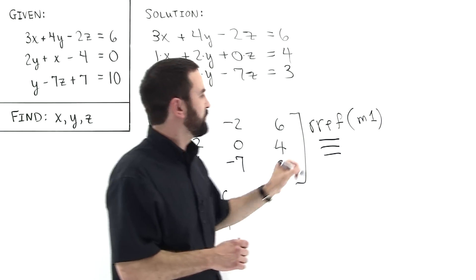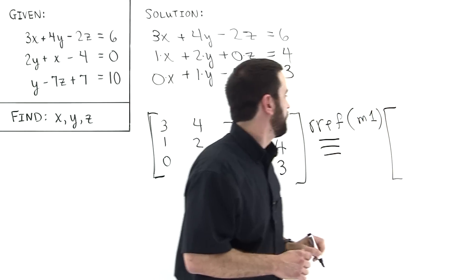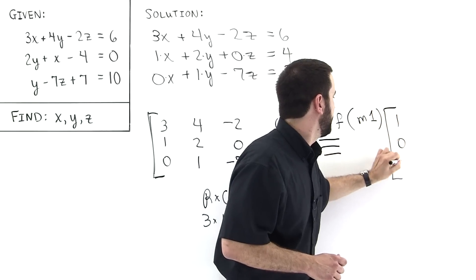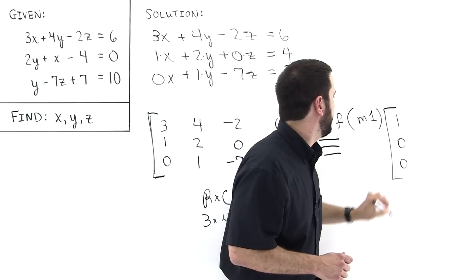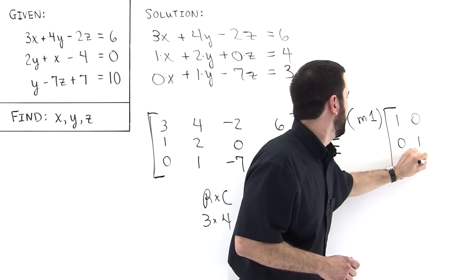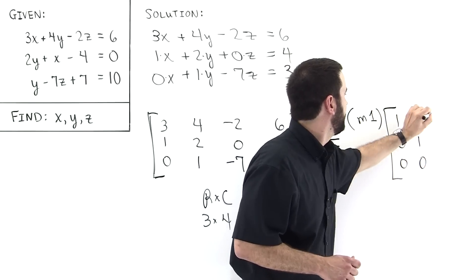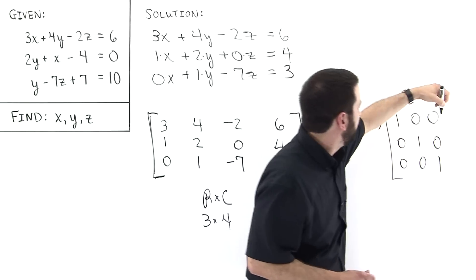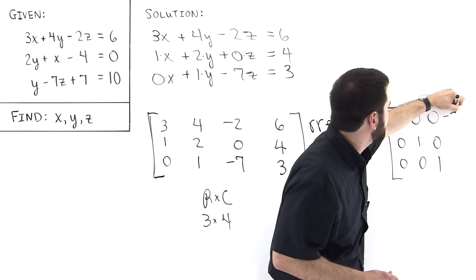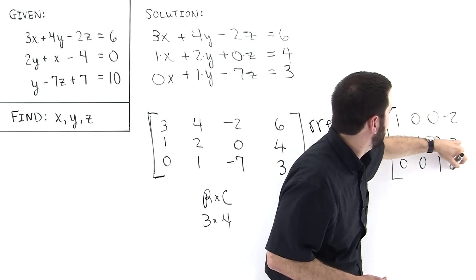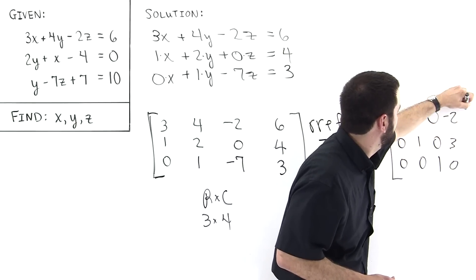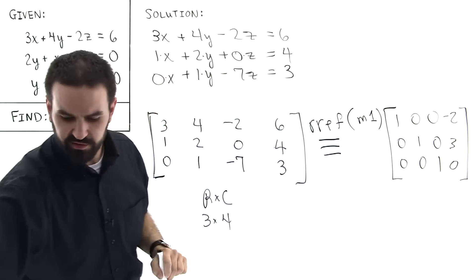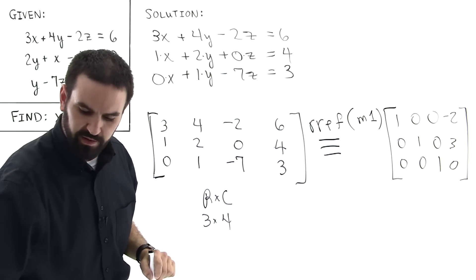The resulting matrix will pop up on the home screen. You have 1, 0, 0 in the first row; 0, 1, 0 in the second row; 0, 0, 1 in the third row; and then minus 2, 3, and 0 on the right-hand side. Let me check this — that is correct.